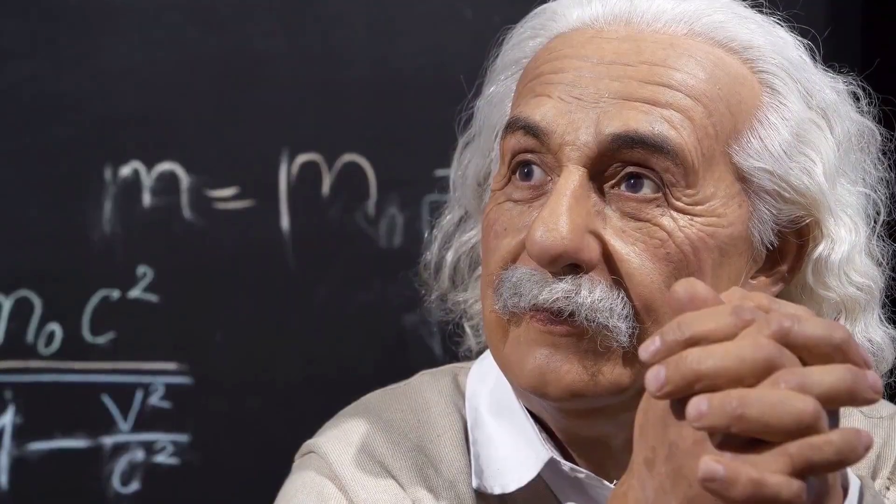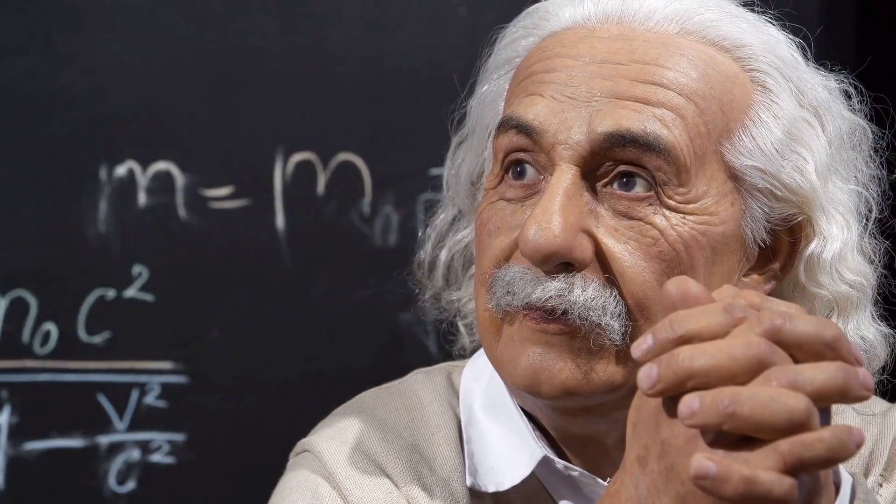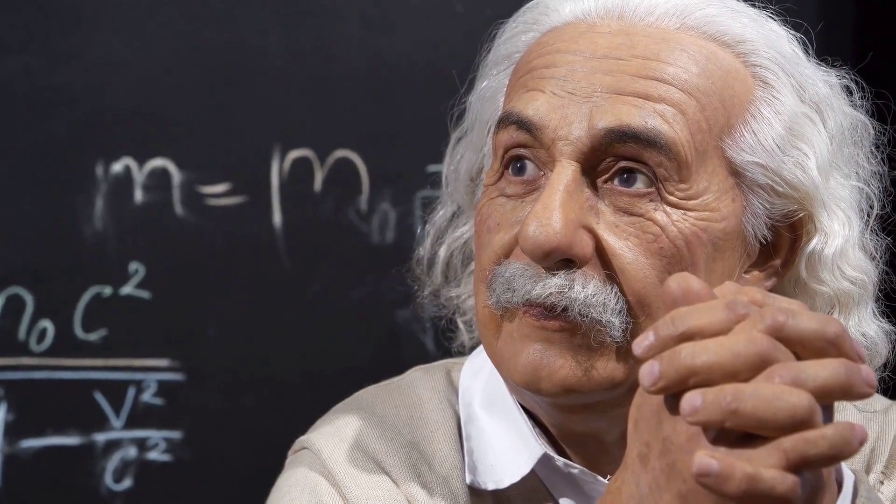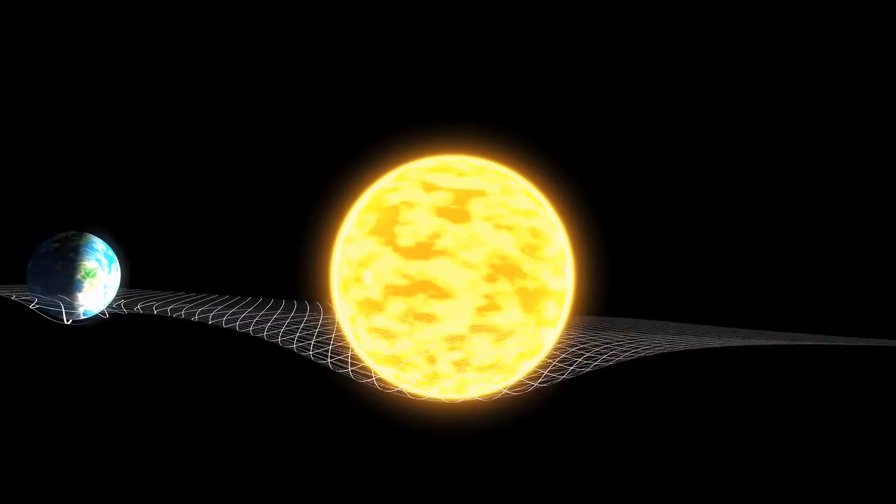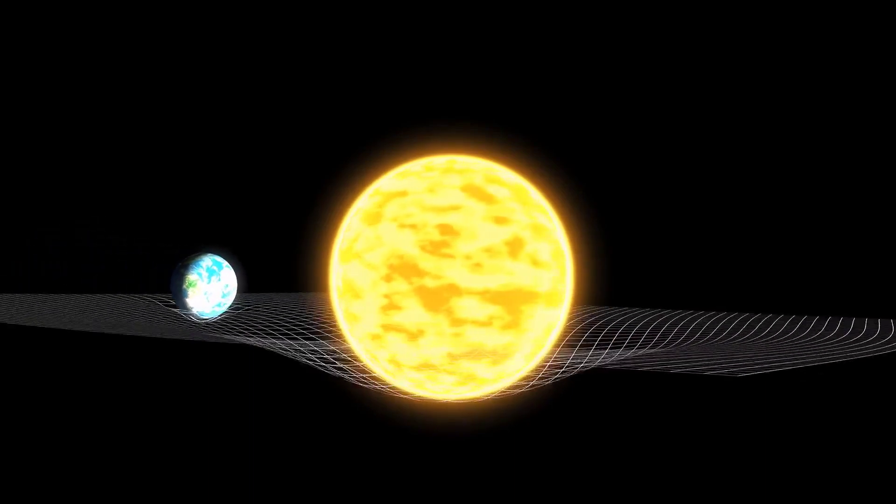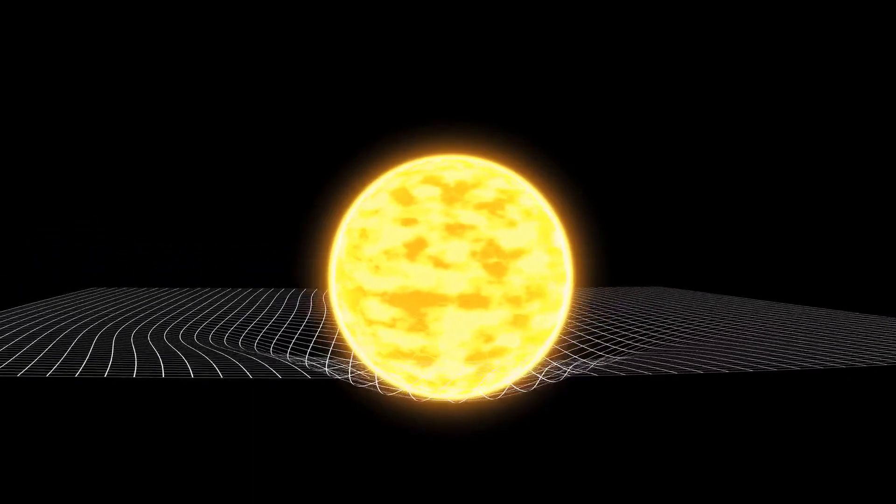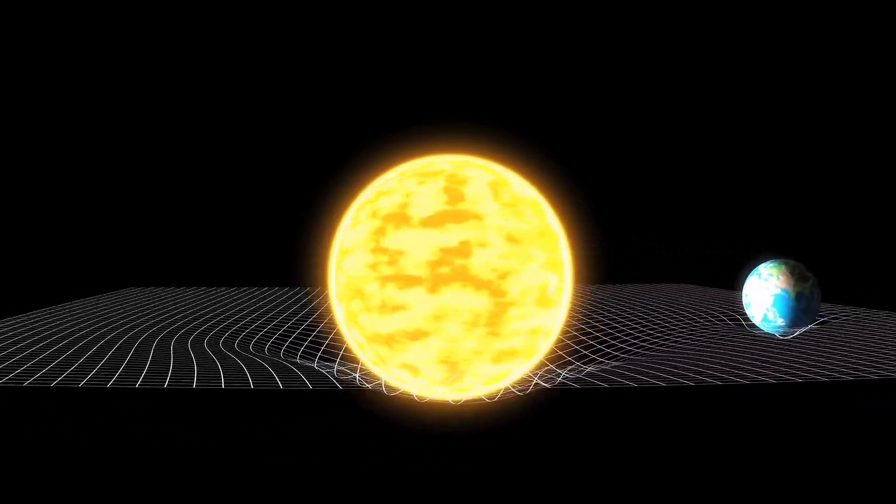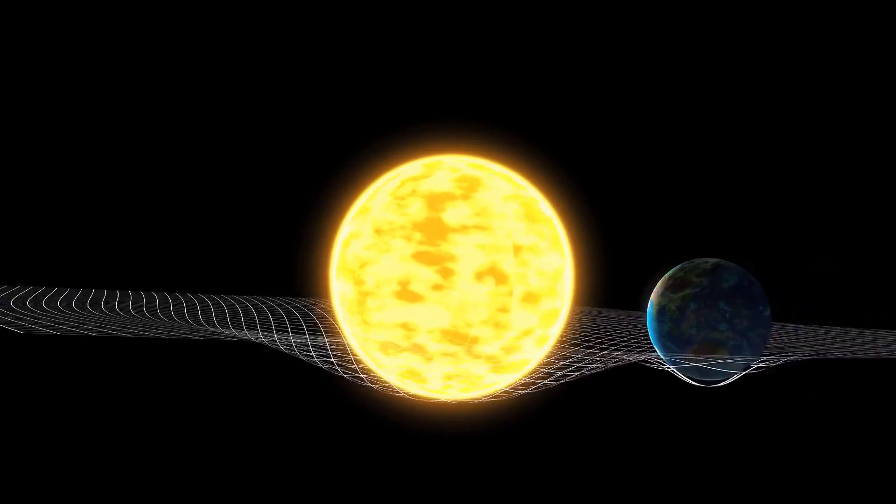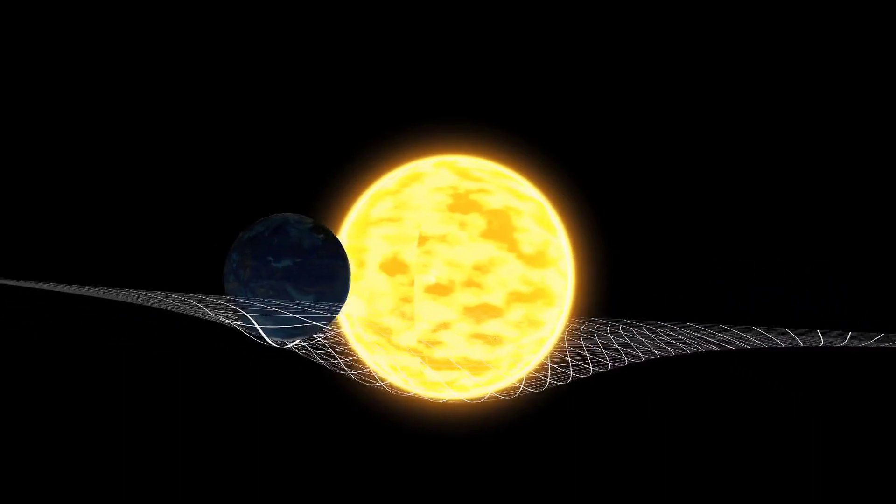To truly understand black holes, we need to delve into the revolutionary ideas of one of humanity's greatest geniuses, Albert Einstein. In 1915, Einstein introduced the general theory of relativity. He proposed that we should not think of gravity as an invisible force, as Isaac Newton had proposed, but rather as a bending in the very fabric of space and time caused by the presence of mass and energy.